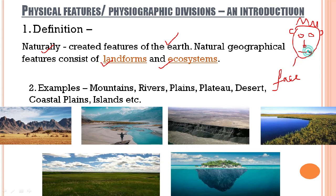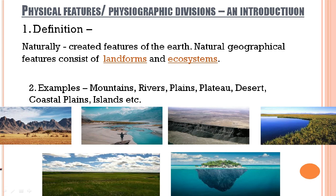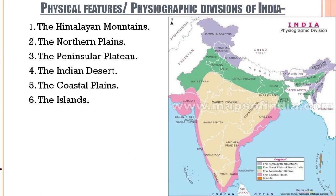Similarly, let us assume this is the earth and it has some naturally created features — for example, mountains, rivers, plains, plateau, desert, coastal plains, and islands. These are mountains, this is a river, this is a plateau, this is a coastal plain, this is a plain, and this is an island. So all these naturally created features of the earth are known as physical features, or we can also call them physiographic divisions of the earth.